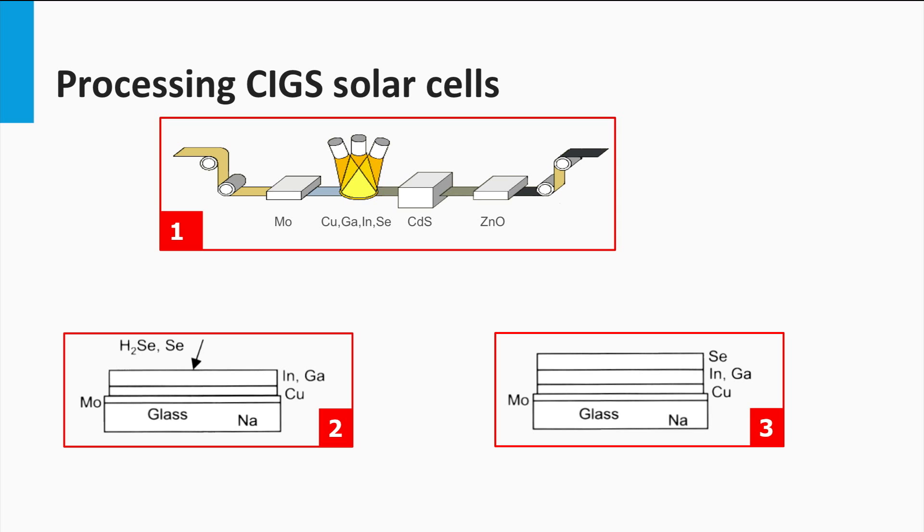Another option is to deposit a selenium-rich layer on top of the initial deposited alloy, and this is annealed. Because of the variety and complexity of the reactions taking place during such selenization co-evaporation process, the properties of CIGS are difficult to control.